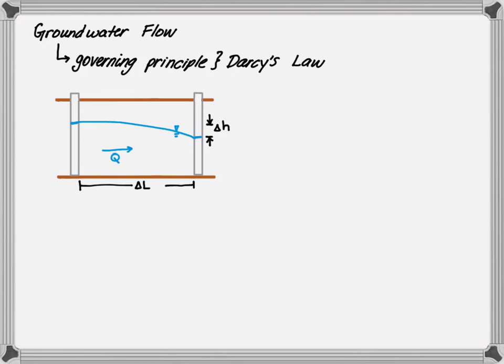We can measure the difference in depth between the two wells — delta H — the length between the wells — delta L — and the flow moving through it. We determine that flow rate by taking the negative times K times A times dH/dL.